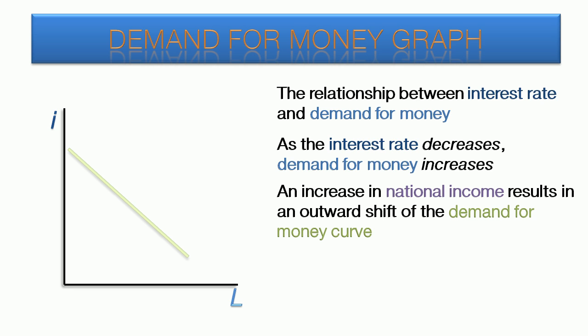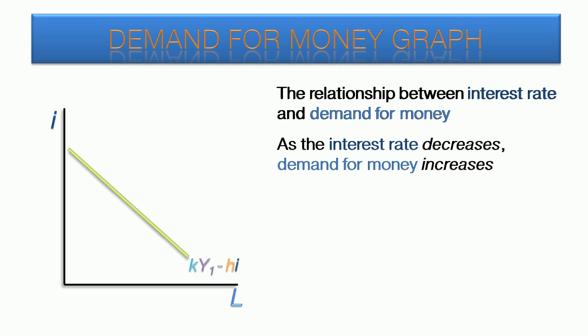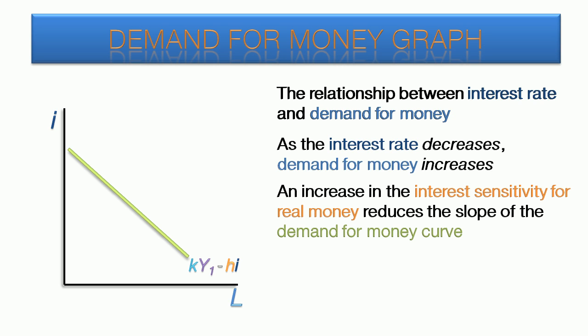An increase in the national income results in an upward and outward shift of the demand for money curve. The amount of the shift depends on the increase in income, as well as the income sensitivity of demand for money. An increase in the interest sensitivity for real money reduces the slope of the demand for money curve. The original H value is low because a large drop in interest is required to increase the demand for money. H prime is higher, meaning the interest sensitivity is higher. The slope is less steep, which means a relatively small decrease in the interest rate causes a large increase in the demand for money.